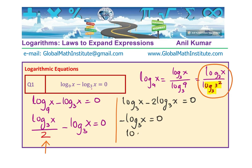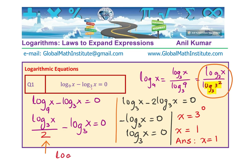From log base 3 of x equals 0, we get x equals 3 to the power of 0, and anything to the power of 0 is 1. Therefore x equals 1. We can check: log base 9 of 1 minus log base 3 of 1 equals 0 minus 0, which is indeed 0. That confirms our answer.